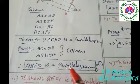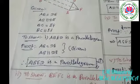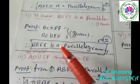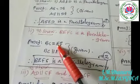ABED is a parallelogram by the given conditions. For the second subdivision, we have to show that BEFC is a parallelogram. BC is equal to EF and BC is parallel to EF, so BEFC is a parallelogram.